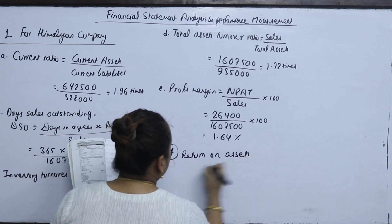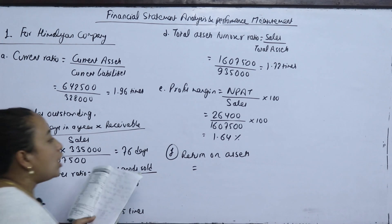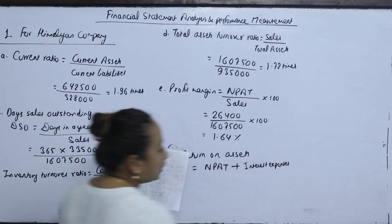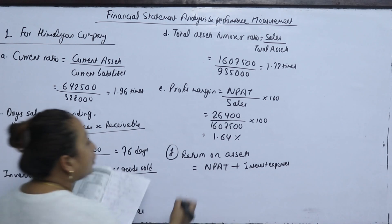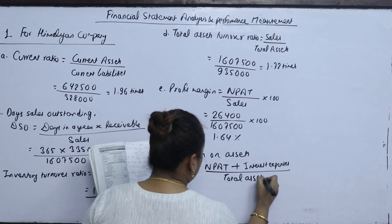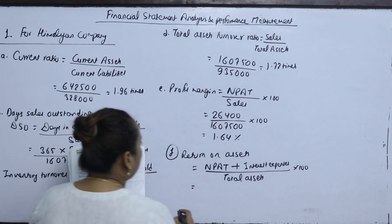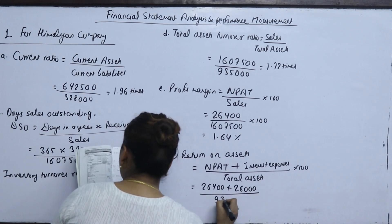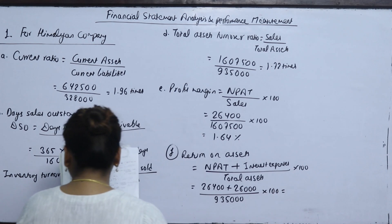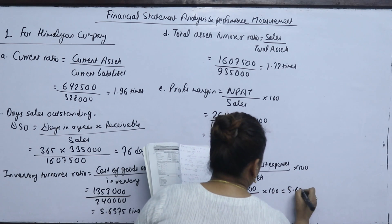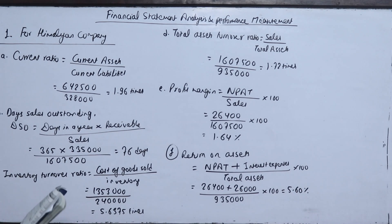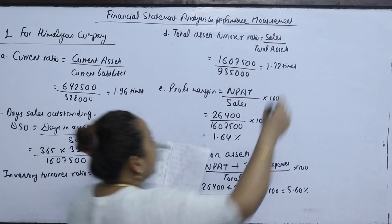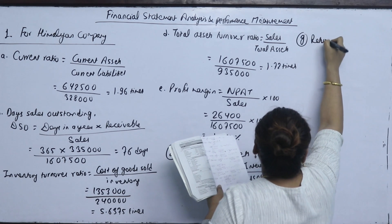The next ratio is return on assets, which is 17% for the industry. Return on assets formula is net profit after tax plus interest expenses, divided by total assets. Net profit is 26,400, interest is 26,000, and total assets is 9,35,000. Return on assets is 5.60%.